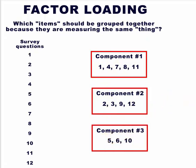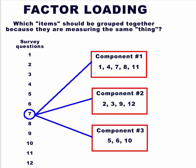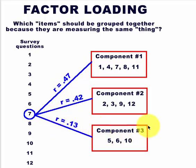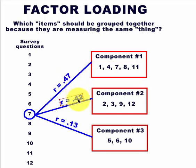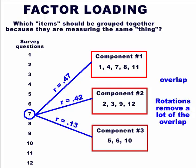Now you're going to run into something problematic with factor analysis altogether. Every once in a while a question doesn't load up so nicely. Take question seven — we ran three correlations between the three new components and got 0.47 for the first, 0.42 for the second, and 0.13 for the third. The third is clearly out, but look how close one and two are — we're only talking about five one-hundredths difference. So it's not a big difference. This is what we call overlap.